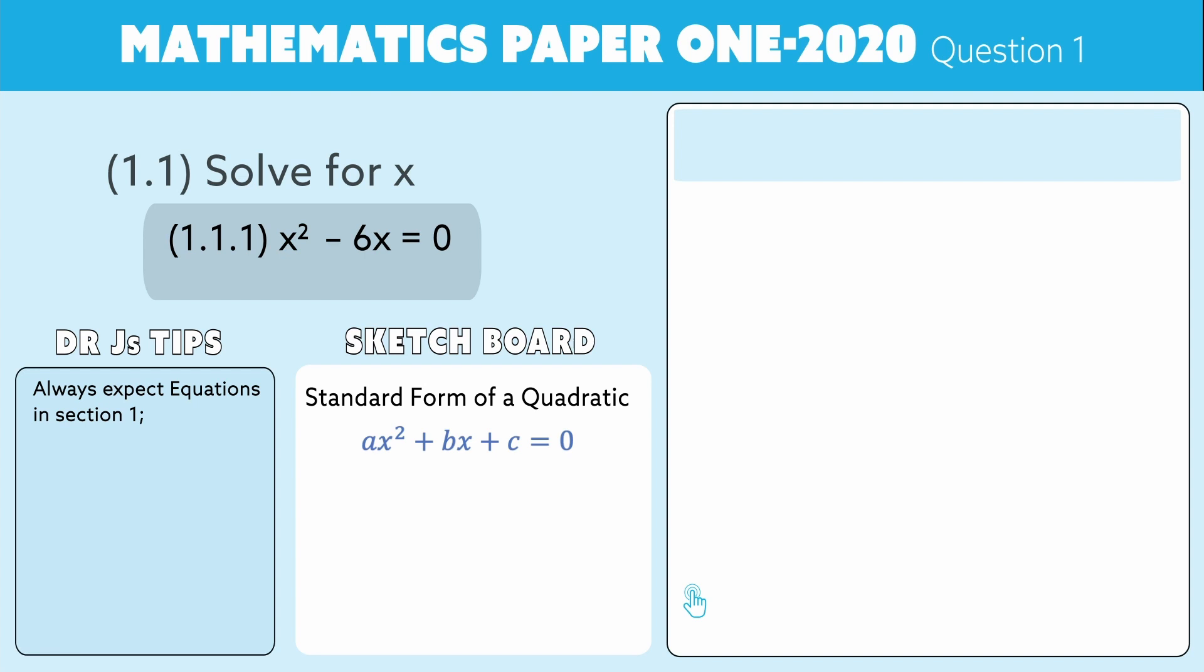The second thing is count the terms. In this particular question we have only two terms given. That makes it a much easier question because if there's two terms it is usually a common factor that you need to remove. So if it's a common factor it would be of the form ax² + bx = 0, so we can remove the x.